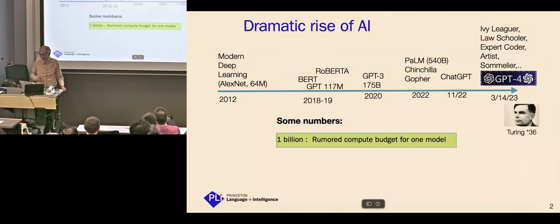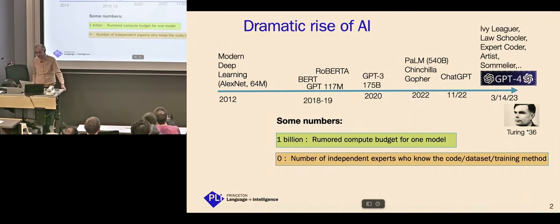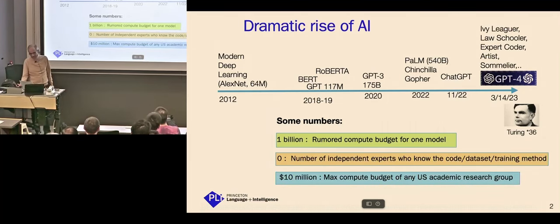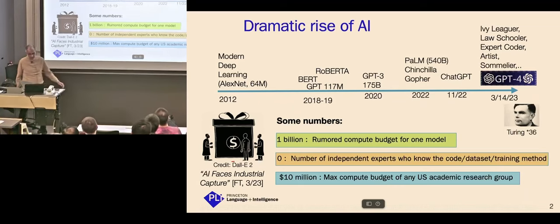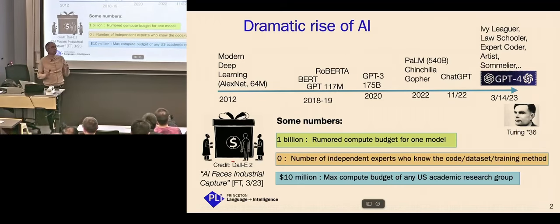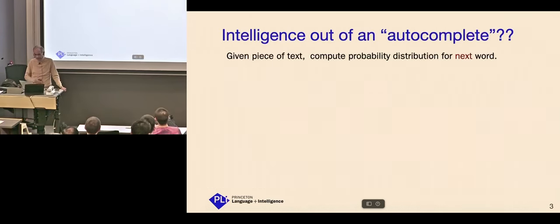And so some quick numbers. $1 billion is a rumored compute budget for one model. They're so large. Zero is the number of independent experts outside these handful of companies who know the code, data set, training method, et cetera. And then about $10 million is the max compute budget. I mean, until a few months ago, it was like $2 million or something of any U.S. academic research group. But now Harvard and Princeton have announced our GPUs haven't quite arrived yet, but soon. And so there's this talk of great interest to the world and society that AI is controlled by a small number of firms, although lately there's some promising signs in the open domain. That was just to set the background, which I think most of you know.